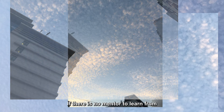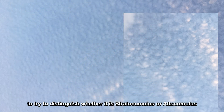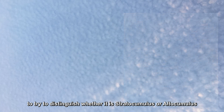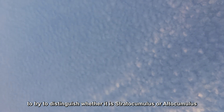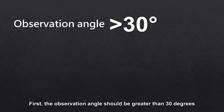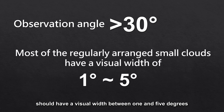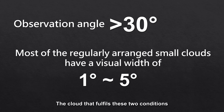If there is no mentor to learn from, we still have some general rules to try to distinguish whether it is Stratocumulus or Altocumulus. First, the observation angle should be greater than 30 degrees. Second, most of the regularly arranged small clouds should have a visual width between 1 and 5 degrees. The cloud that fulfills these two conditions should be Altocumulus.